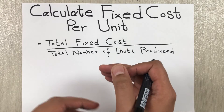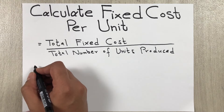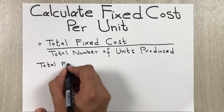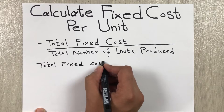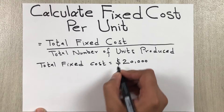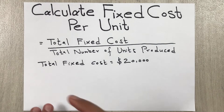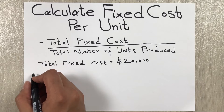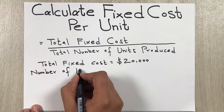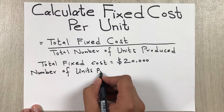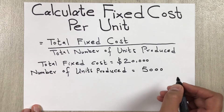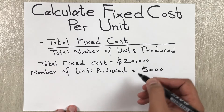Let's say our total fixed cost is twenty thousand dollars, and the number of units produced is five thousand. So we have our values ready to plug into the formula.